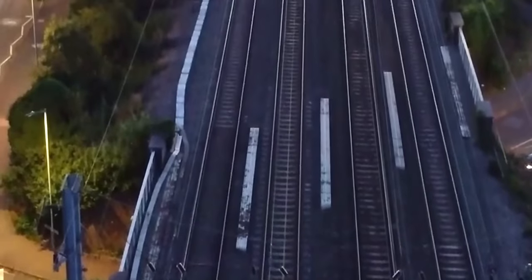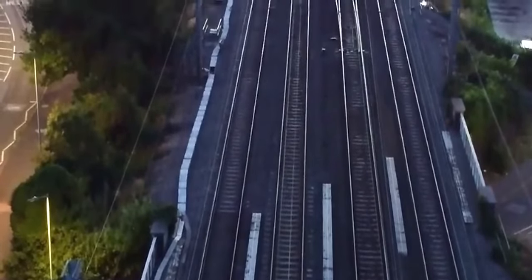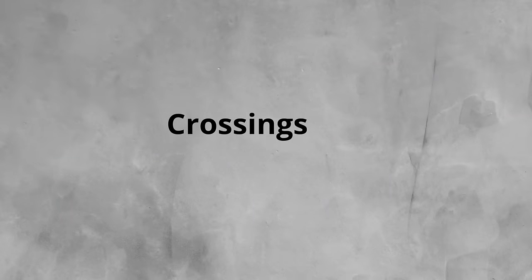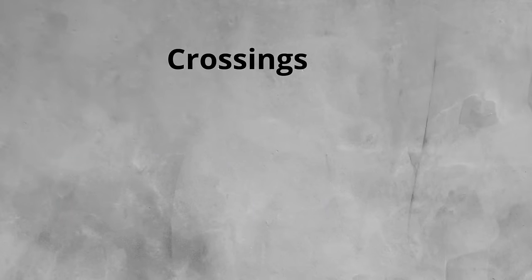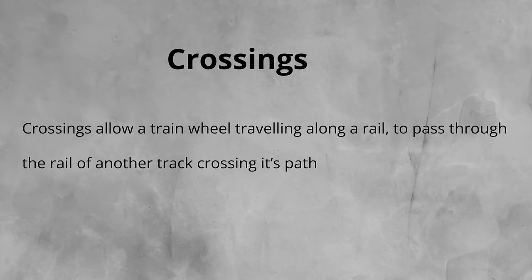So now we have an understanding of switches, let's look at the second part of S&C: crossings. The main function of, and reason we have crossings in track, is that they allow a train wheel travelling along a rail to pass through the rail of another track that is crossing its path. Even in a simple turnout, one rail has to cross another, requiring one crossing. The more complex a junction layout gets, the more crossings are required.